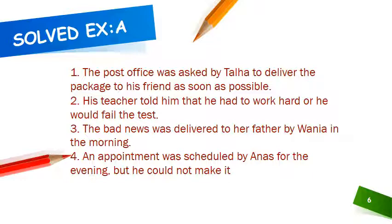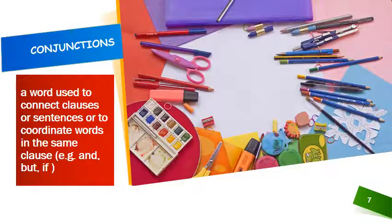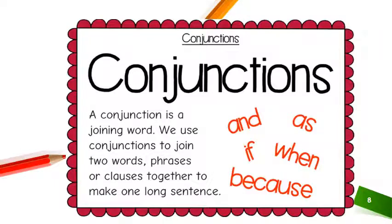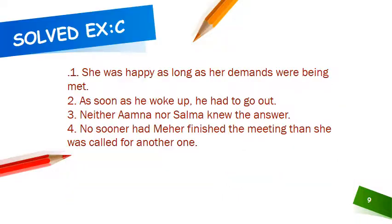Now moving on to conjunctions. What are conjunctions? A word used to connect clauses or sentences, or to coordinate words in the same clause. For example: and, but, if, that — these are all conjunctions. A conjunction is a word or a group of words that can join other words, groups of words, or sentences. A conjunction therefore helps us make what we want to say shorter and more precise.